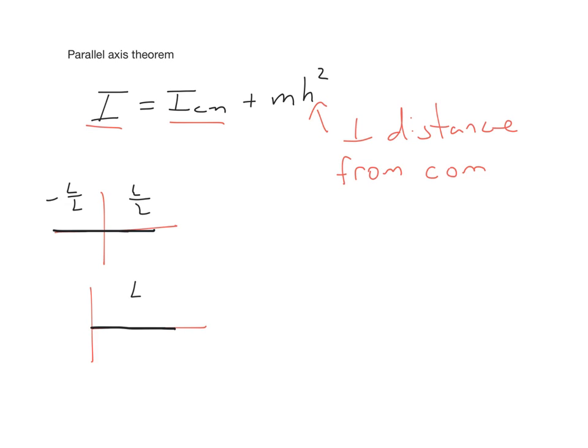So now let's use the Parallel Axis Theorem to get the new rotational inertia. All right, so we're trying to figure out the new rotational inertia. And let's take the rotational inertia of that rod around its center of mass, and that was what we solved for first, and that's what we can find on our chart. And that's 1 over 12 mL squared.